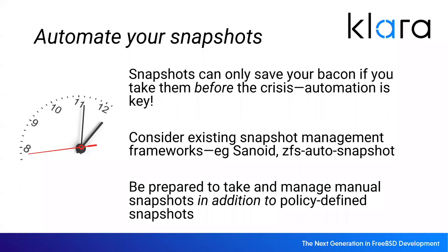I also use a tool called ZFS Snapshot Management — same idea of needing a snapshot every 15 minutes, keeping the ones at the top of the hour for longer than the 15-minute ones, and keeping the ones from Sundays for six months. That way you have coverage going backwards, but you don't end up with too many snapshots.